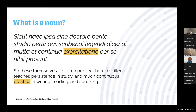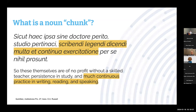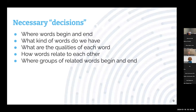A noun chunk isn't just training in and of itself — it's a kind of training, a continuous training, much continuous training. We see how all these words are working together in coordination. We're not just dealing with a noun, but with the whole concept of that noun. Those genitives are part of it as well: much continuous practice in writing, reading, and speaking. What does it take for us as readers of Latin — or whatever language you're working in — to identify not only the noun but the constellation of words around it?